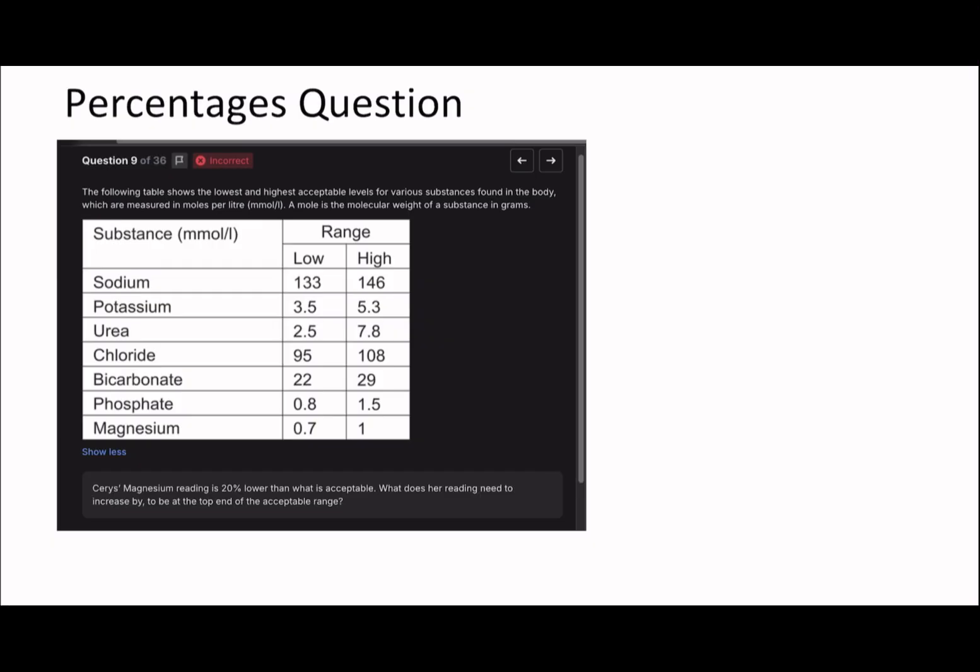Let's have a look at this. So it says Keras's magnesium reading is 20% lower than what is acceptable. The table shows the lowest and highest acceptable levels. So if I get my calculator and I do 0.7 times 0.8, which is 0.56, that's what her reading currently is.